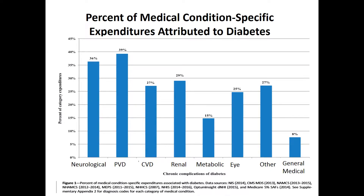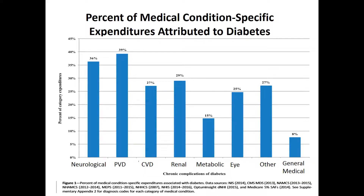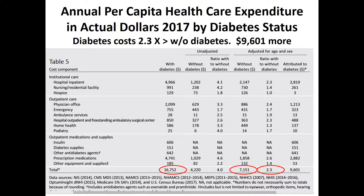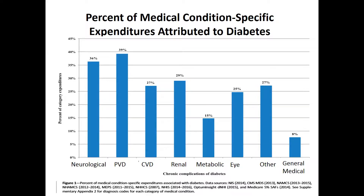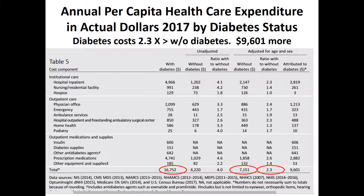Regarding complications that people with diabetes have: 36% of those with neurological diseases have diabetes, and 39% of those with peripheral vascular disease have diabetes. Diabetes is very over-represented in life-changing diseases — 27% of cardiovascular disease, 29% of renal disease, versus only 8% in the general medical population. So diabetes is disproportionately loaded with the complications it creates.